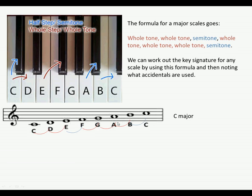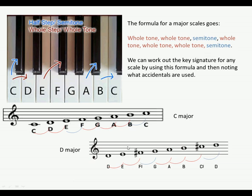Starting on C: a whole tone above is D, a whole tone above that is E, then the semitone E to F, then a whole tone F to G, whole tone G to A, whole tone A to B, and the semitone B to C. This is why C major has no sharps or flats — just using these white notes we make up the correct formula. Now let's try D major: whole tone D to E, whole tone E to F sharp — so D major must have an F sharp — then semitone to G, whole tone G to A, whole tone A to B, whole tone B to C sharp, and semitone C sharp to D.